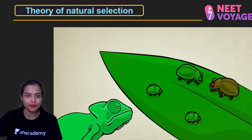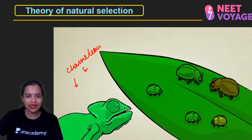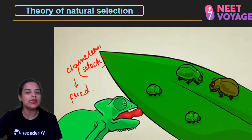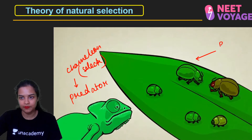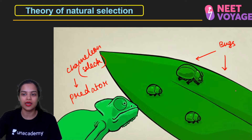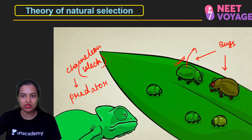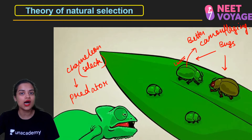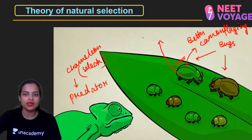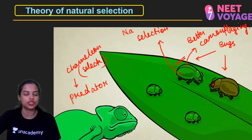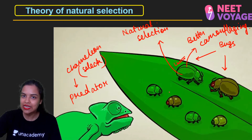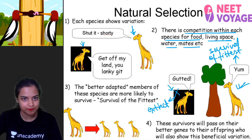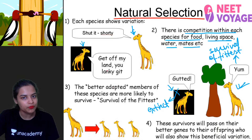Another example shows a chameleon — which acts as the selector/predator — trying to feed on leaf bugs. There are two varieties of bugs. The brown-colored bug stands out more (cannot camouflage well), while another bug camouflages better against the background. The chameleon eats the brown one, so the better-camouflaged bug is selected by nature. The same principle applies to the giraffe example: short-necked ones got extinct because in desert conditions, lower shrubs and grasses dried up, and they couldn't reach higher branches.